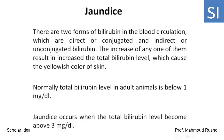There are two forms of bilirubin in the blood circulation: direct or conjugated, and indirect or unconjugated bilirubin. An increase in any one of them results in an increase in total bilirubin levels, which causes the yellowish color of skin. Normally, total bilirubin level in adult animals is below 1 mg/dL. Jaundice occurs when the total bilirubin level becomes above 3 mg/dL.